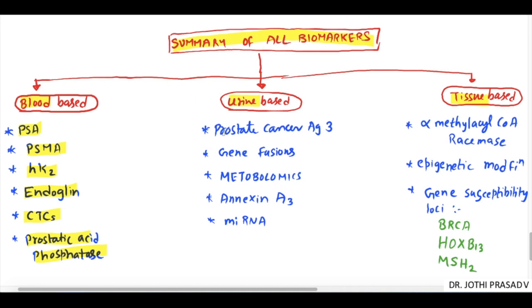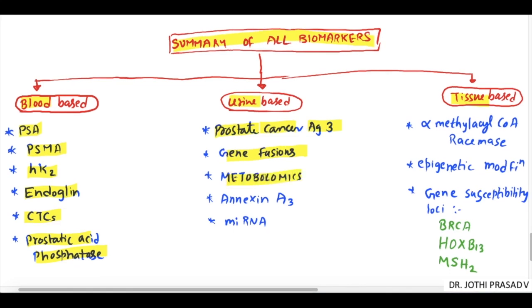Urine-based markers include prostate cancer antigen 3 (PCA3) and gene fusions. Metabolomics-based markers include sarcosine, a metabolite of glycine used to identify cancer cells. Annexin A3 is a peculiar marker — it is inversely related to the presence of prostate cancer.